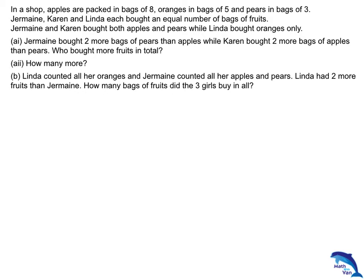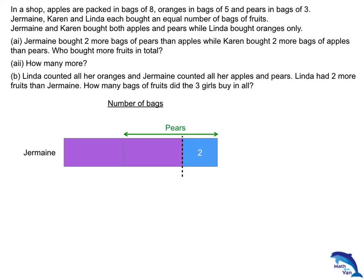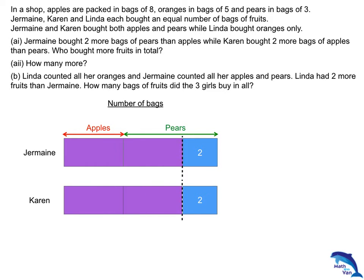They all have the same total number of bags of fruits. For Jermaine, she bought 2 more bags of pears than apples, so we take out the 2 and divide the remaining portion into 2. Call it 1 unit — so 1 unit plus 2 goes to bags of pears, and 1 unit goes to bags of apples. For Karen, do the same: 1 unit plus 2 goes to bags of apples, and 1 unit goes to bags of pears.